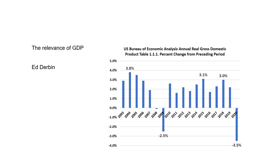GDP stands for Gross Domestic Product, and typically what we look at in the chart on the right is percentage changes from the preceding period. Looking on an annual basis, the BEA or Bureau of Economic Analysis also publishes this data on a quarterly basis. In 2020, we had a negative 3.5%, which is wholly attributable to the COVID experience. Prior to that, we were growing at a positive rate.